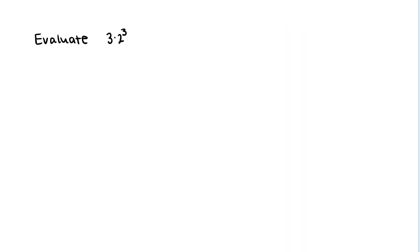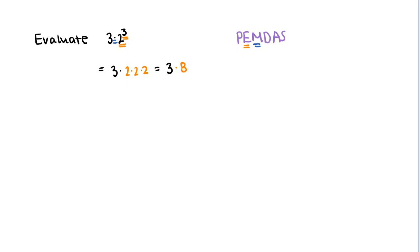The next expression is 3 times 2 cubed. Writing down PEMDAS to help evaluate using order of operations — there are two operations: exponentiation and multiplication. Our acronym tells us to perform exponentiation before multiplication. So this is 3 times the result of 2 cubed, which is 2 times 2 times 2. That gives us 3 times 8, and 3 times 8 is 24. So 3 times 2 cubed equals 24.